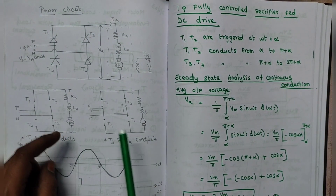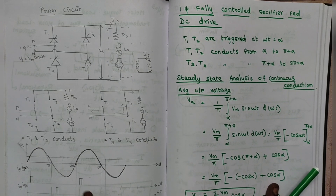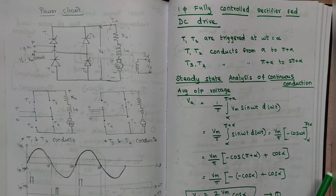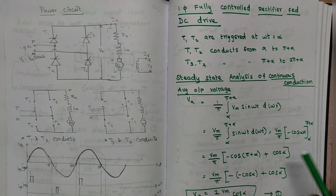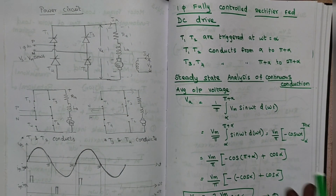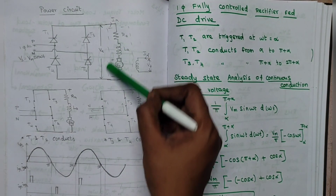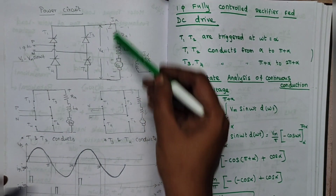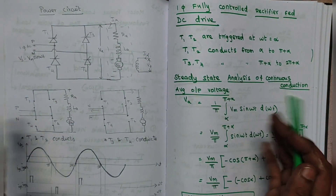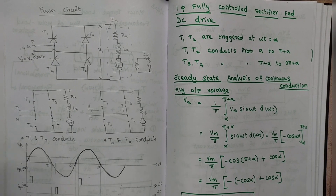We are going to see the steady state analysis of this particular motor. There are two types of conductions: continuous conduction and discontinuous conduction. First we are going to see about continuous conduction. If the armature current IA is continuously flowing to this motor — meaning if the armature current does not come to zero and is continuously flowing — it is continuous conduction.